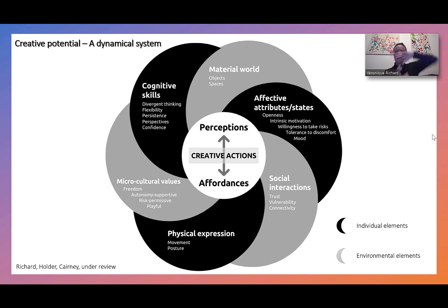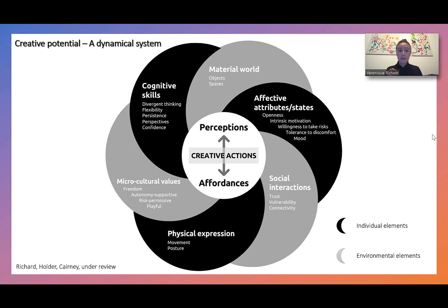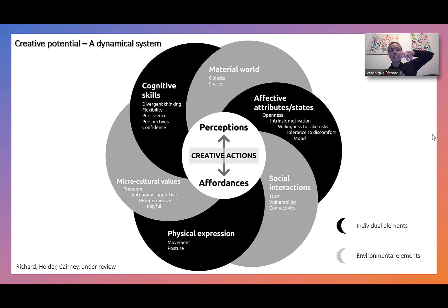What about the environment? There are different environmental elements to consider. First, what are the values of your environment — does it encourage freedom, autonomy, and risk? How are the social interactions — are they based on trust, vulnerability, and connectivity? And finally, how do you set up your physical environment — is it straightforward, or is there space for materials and objects to be arranged in a non-intuitive way?